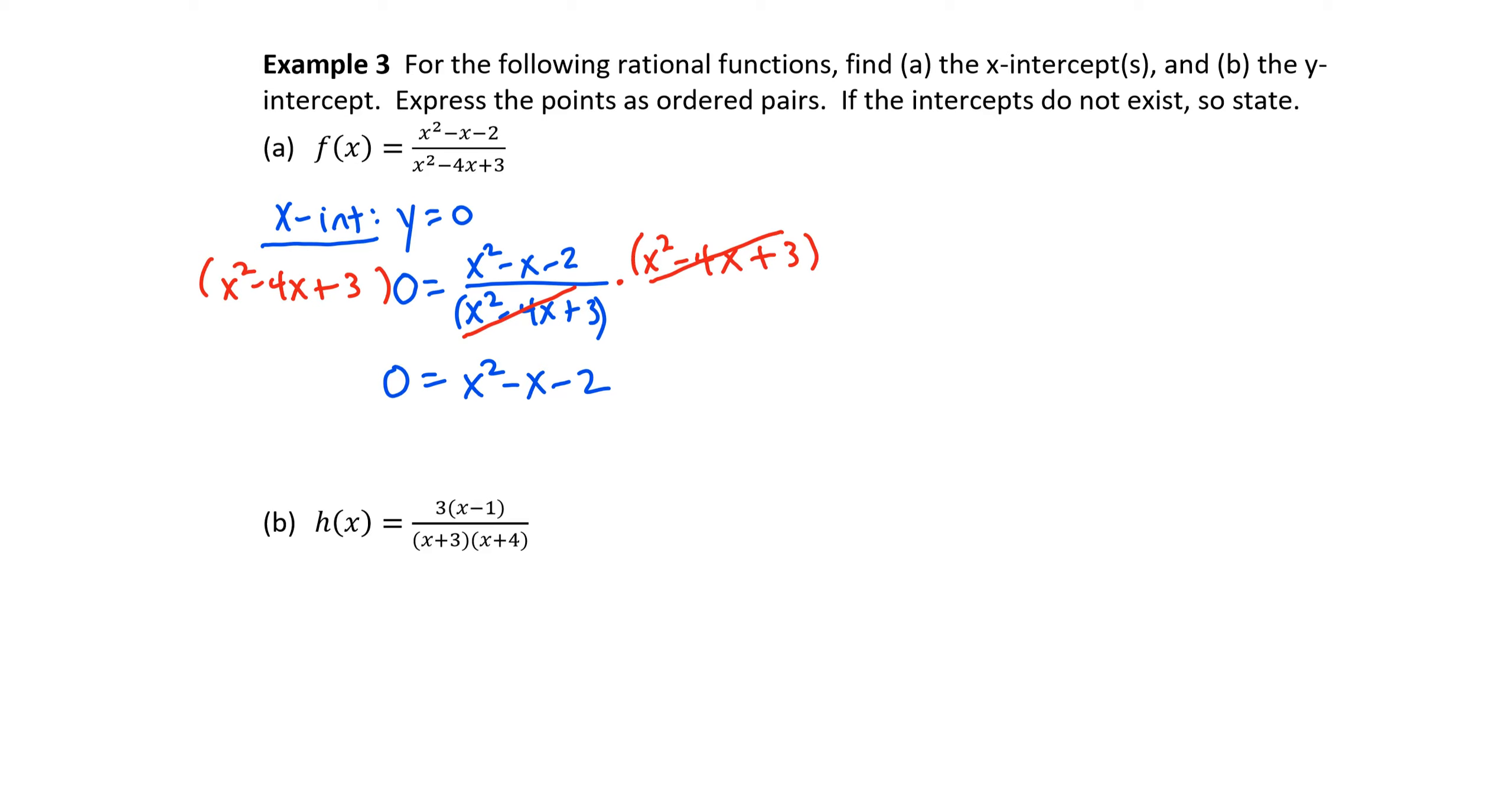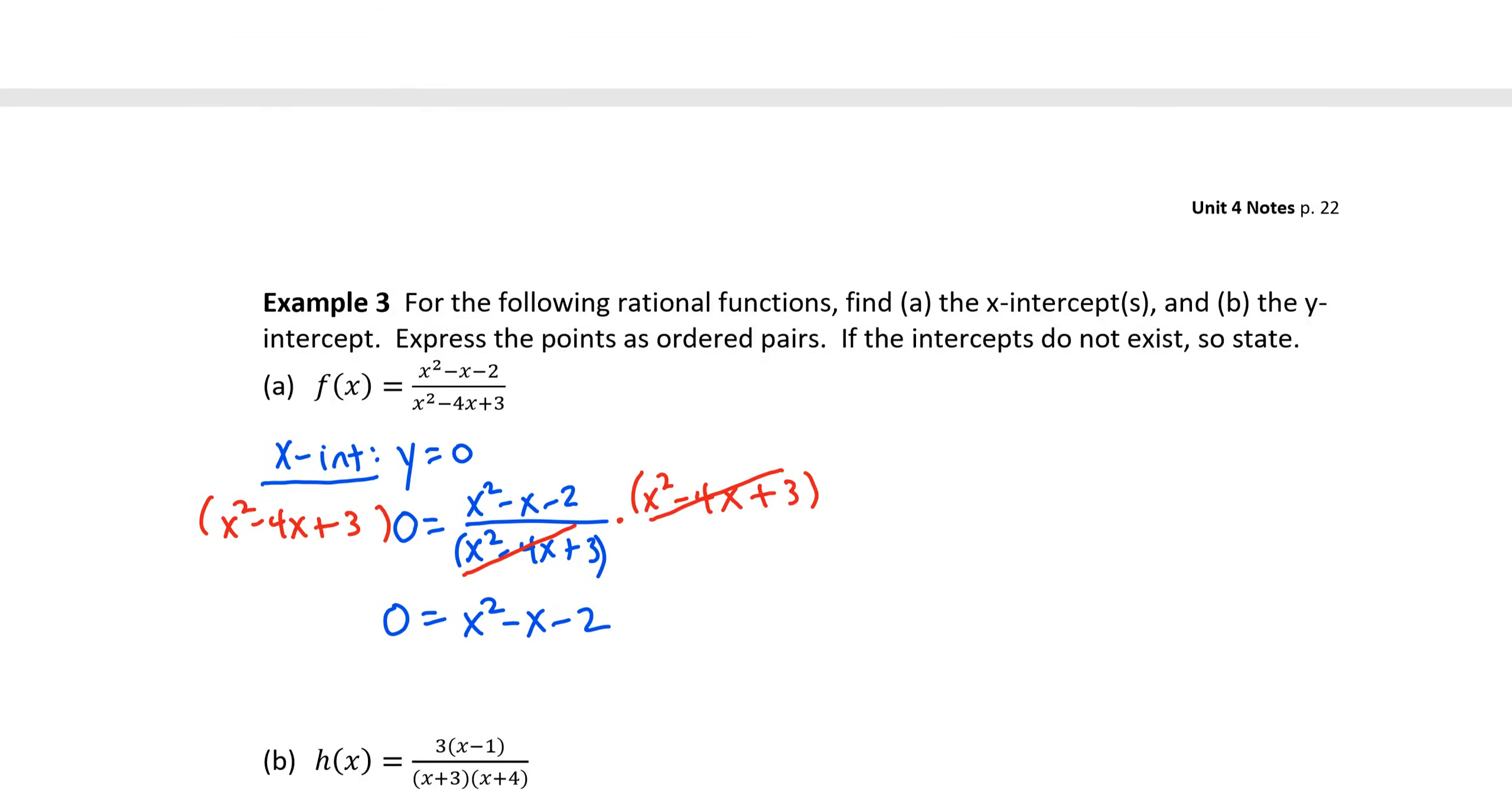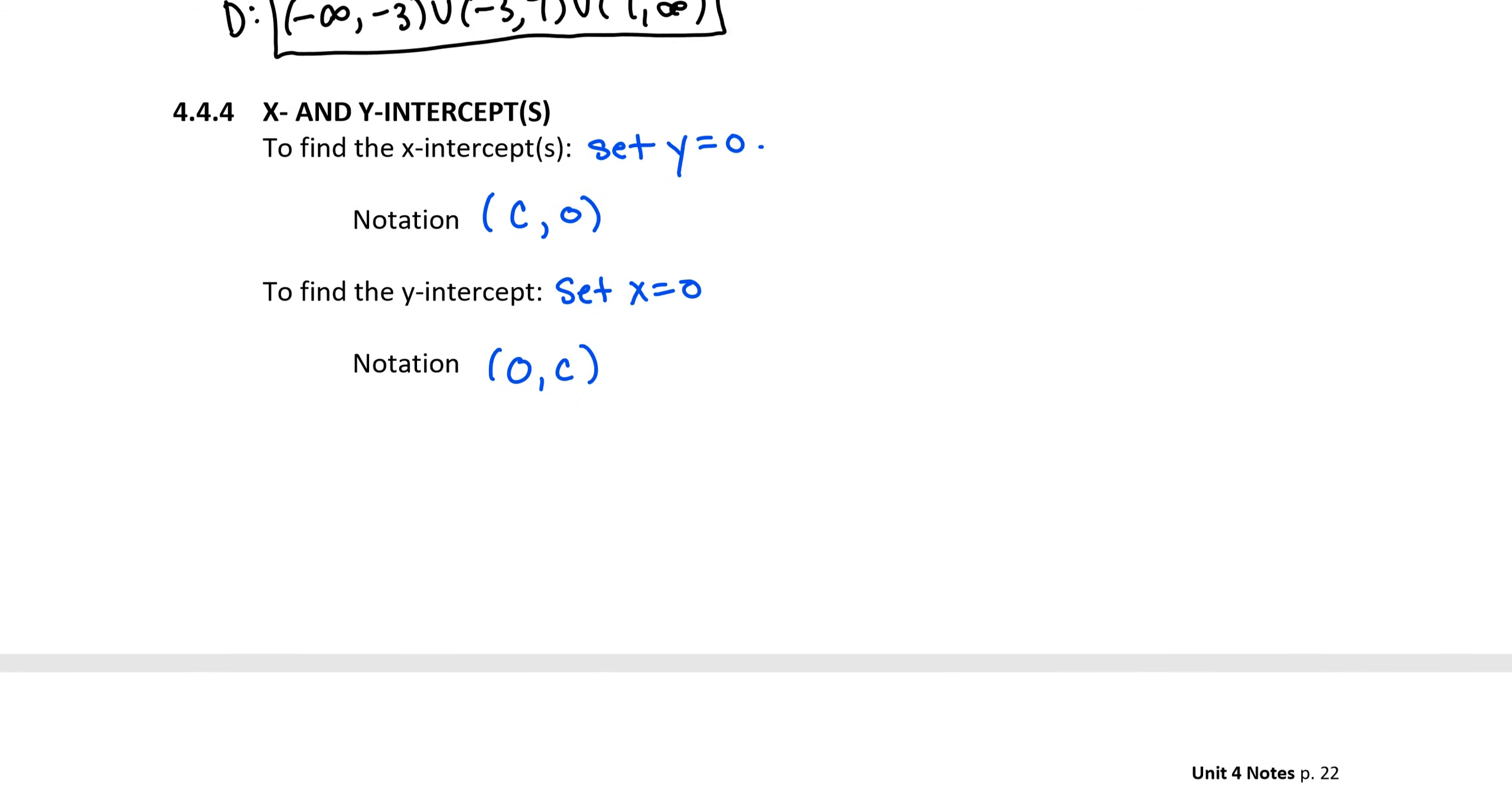Anytime you find an x intercept for a rational function, that's always going to be the case. You set the rational function equal to 0, multiply both sides by the denominator, and you end up with the numerator equal to 0. Therefore, anytime we're finding an x intercept, we can observe that the shortcut